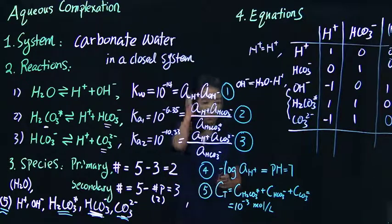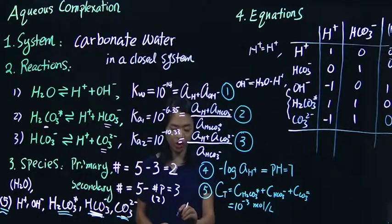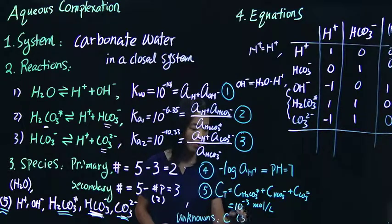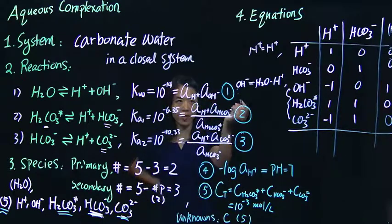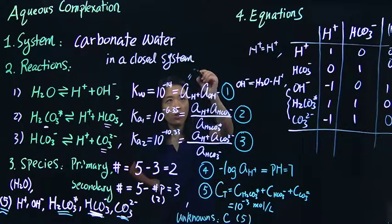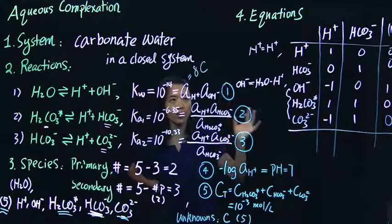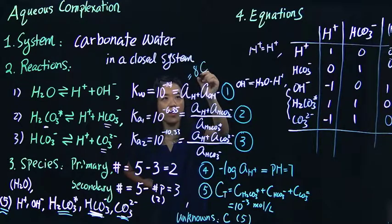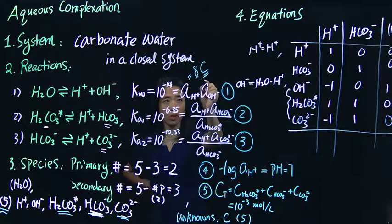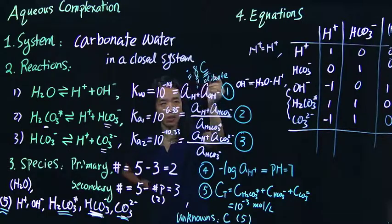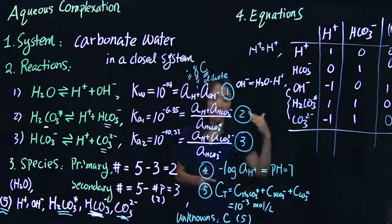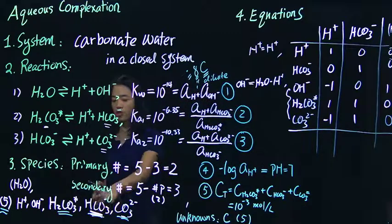The unknowns are the concentrations C of all five species. Note that activity A equals activity coefficient times concentration C. In a system with fixed salinity or concentration level, the activity coefficients are constant, so we solve only for C. In dilute systems, the activity coefficient is close to 1, so we can approximately treat activity as equal to concentration. This gives us the concentration of all five chemical species.